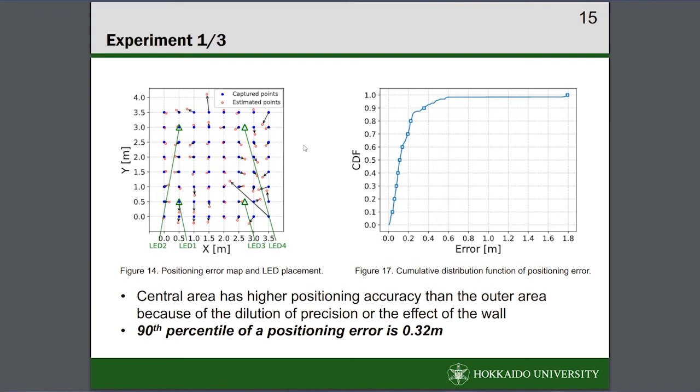Figure 17 shows the cumulative distribution function of positioning error. As a result, a 90th percentile of 32cm was achieved.